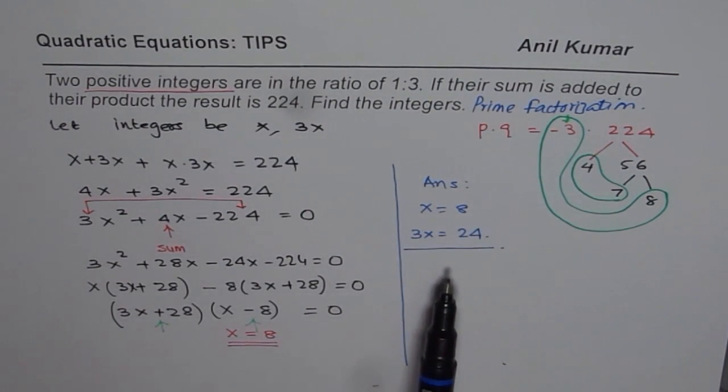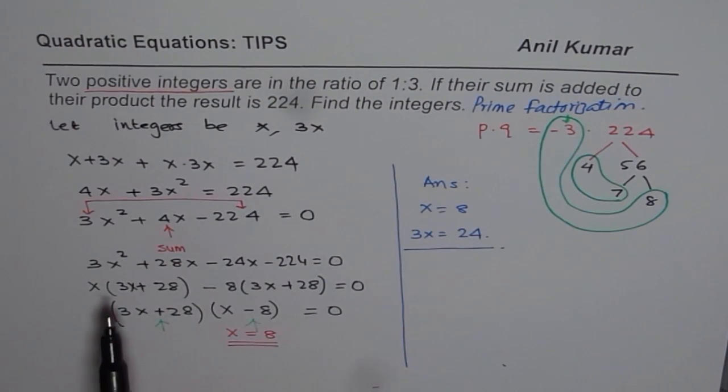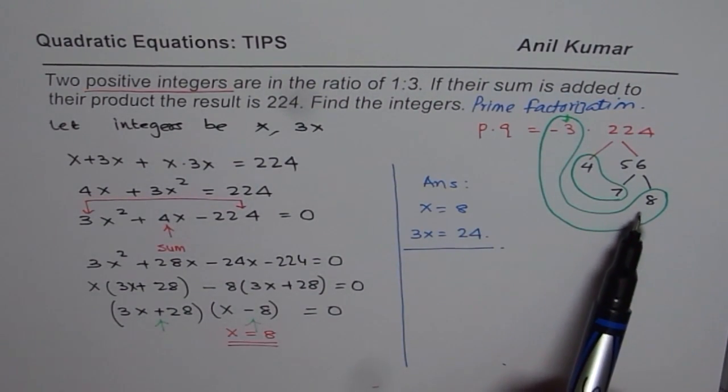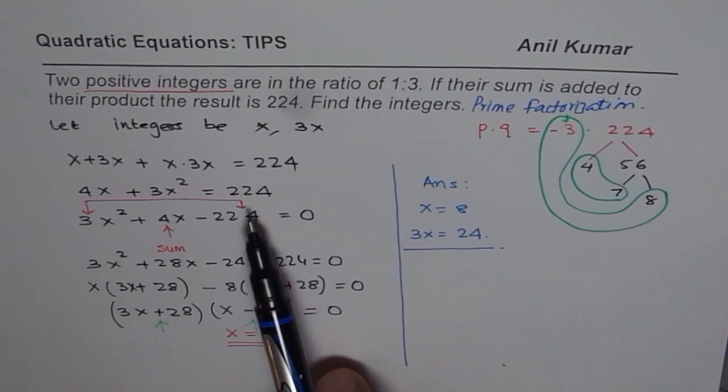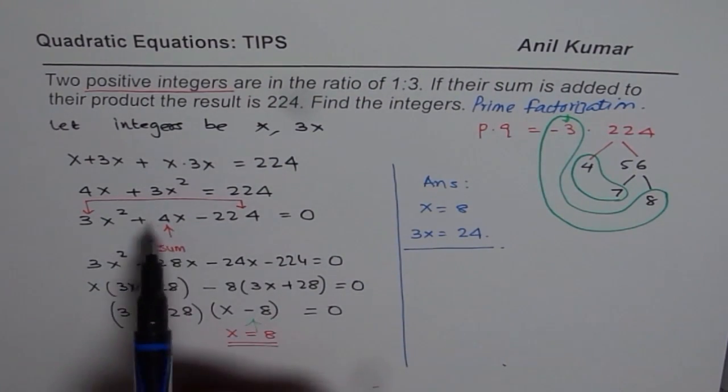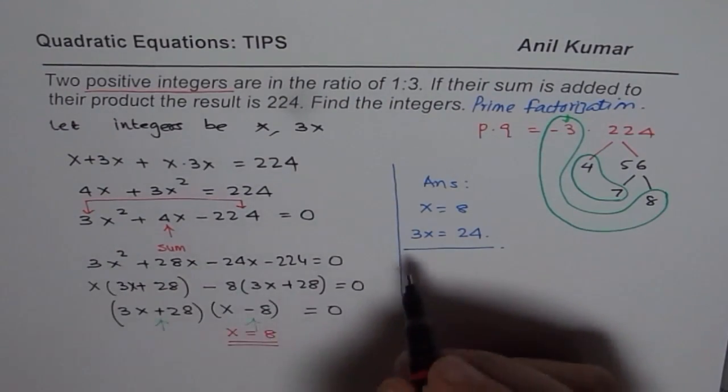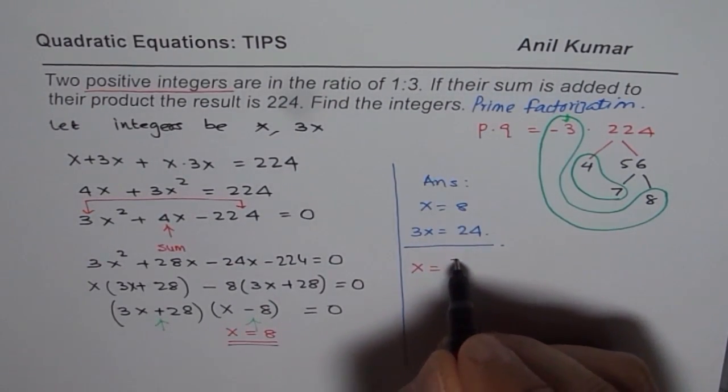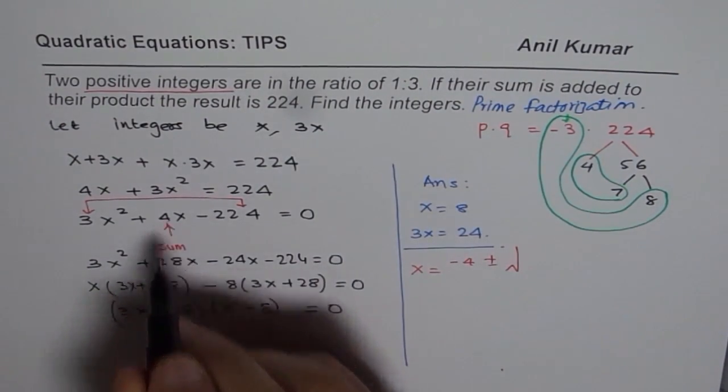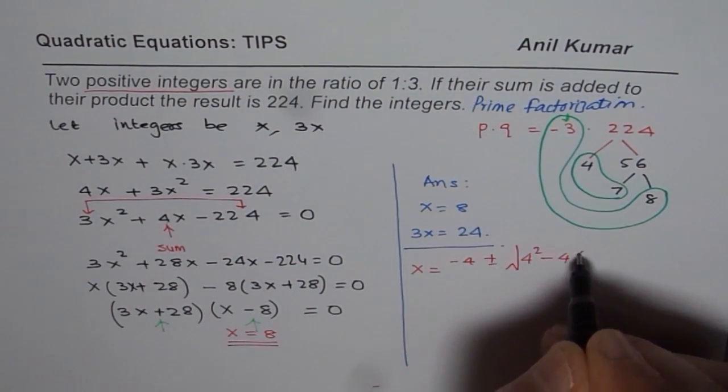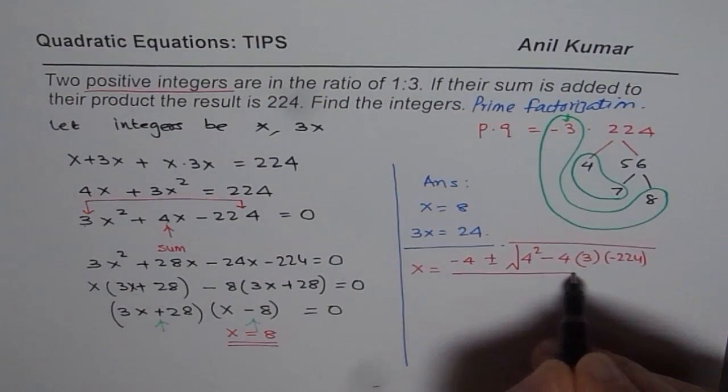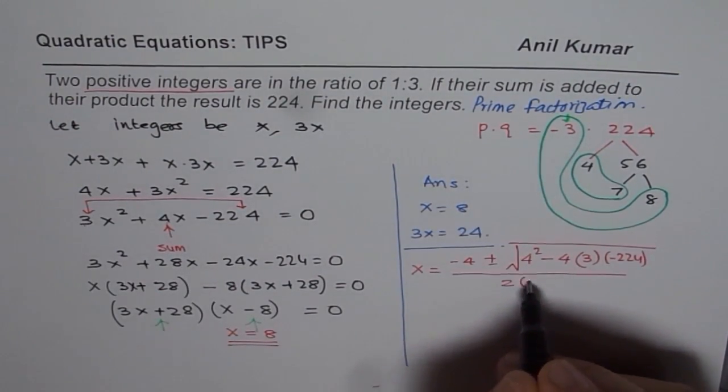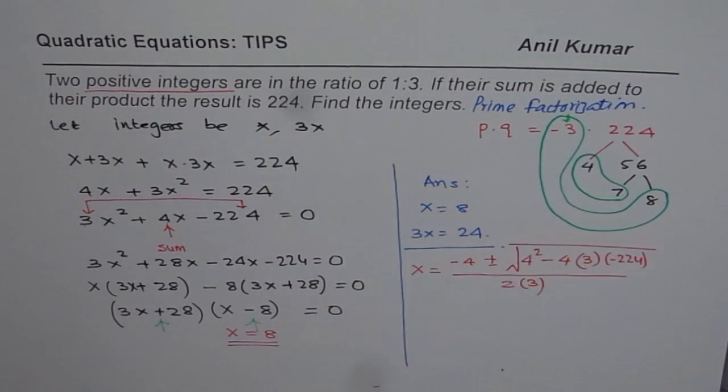I hope you understand and appreciate that we had a difficult question to factor and the prime factorization technique really helped us to factor this very efficiently. You could always use quadratic formula and answer this question. Using quadratic formula, what do you get? Let me write down that also. So you will get x equals to minus b which is minus 4 plus minus square root of b square, that is 4 square minus 4ac, 4 times 3 times minus 224, divided by 2 times a which is 3. So when you solve this, you will also get the same result.